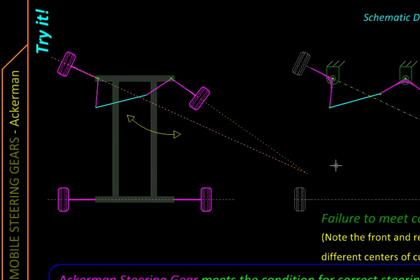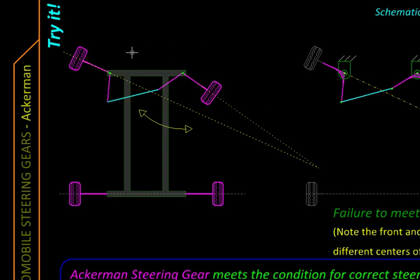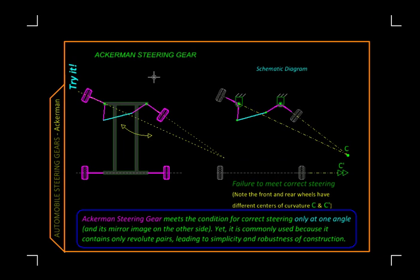Therefore, some or maybe all four wheels will be dragged to an extent and will rub on the road. So this is not giving us correct steering. However, because all the pairs used here are revolute pairs, which can be well lubricated and will have lesser wear, this makes the mechanism more robust. Therefore, it is a more commonly used steering mechanism.